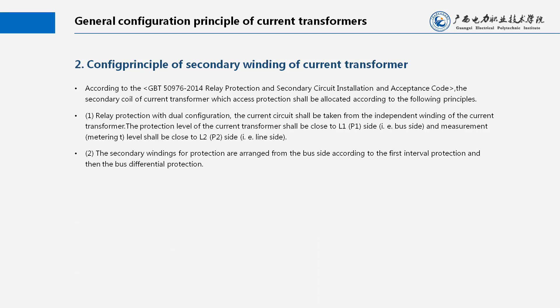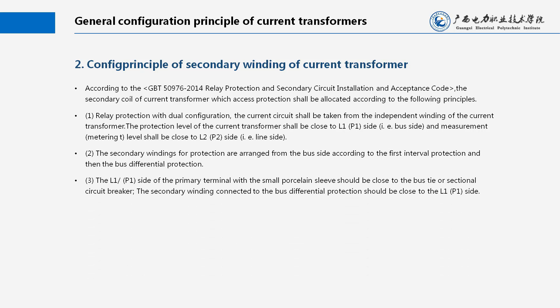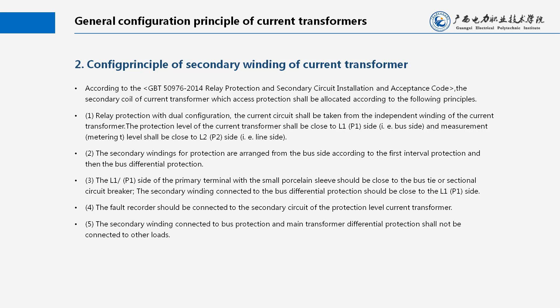2. The secondary windings for protection are arranged from the bus side, according to the first interval protection and then the bus differential protection. 3. The L1, P1 side of the primary terminal with the small porcelain sleeve should be close to the bus tie or sectional circuit breaker. The secondary winding connected to the bus differential protection should be close to the L1, P1 side. 4. The fault recorder should be connected to the secondary circuit of the protection level current transformer. 5. The secondary winding connected to bus protection and main transformer differential protection shall not be connected to other loads.